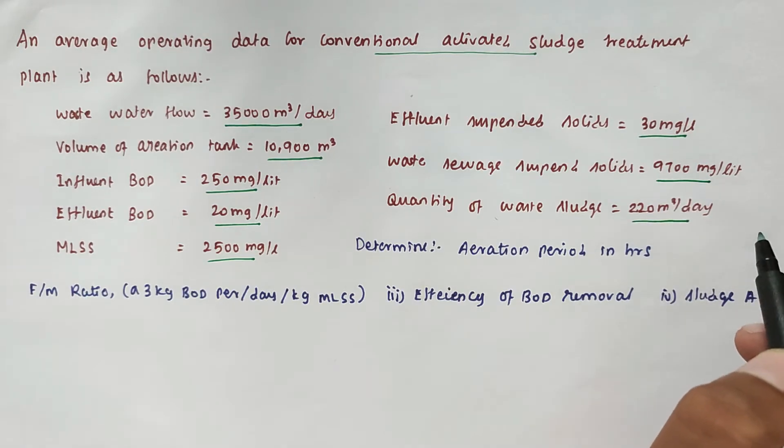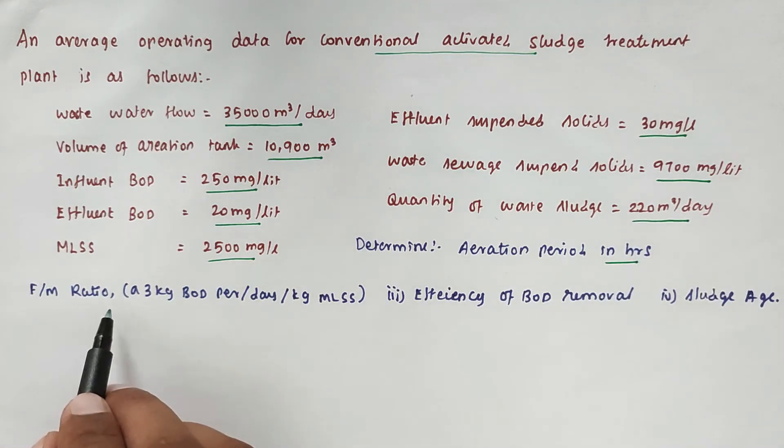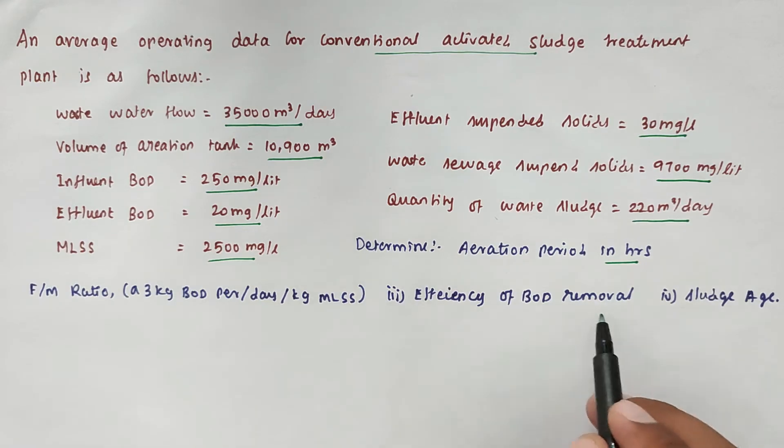We have to determine: aeration period in hours, F/M ratio (food by microbial mass ratio), efficiency of BOD removal, and sludge age. These are all the things we have to find out.